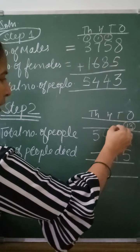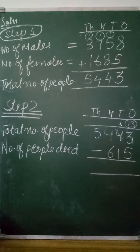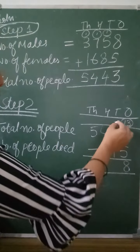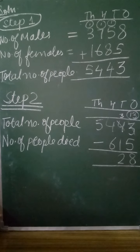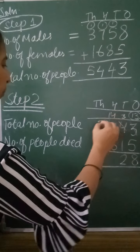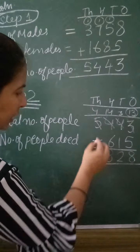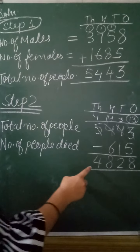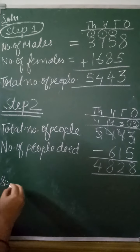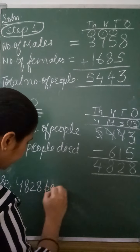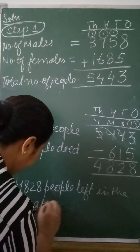3 is smaller than 5, so we borrow — it becomes 13. 13 minus 5 is 8. Then 3 minus 1 is 2. At the hundreds place, 4 is smaller than 6, so we borrow from the thousands place: 14 minus 6 is 8. Then 4 is left, so we write 4. The answer is 4,828 people left in the town at the end of the year.